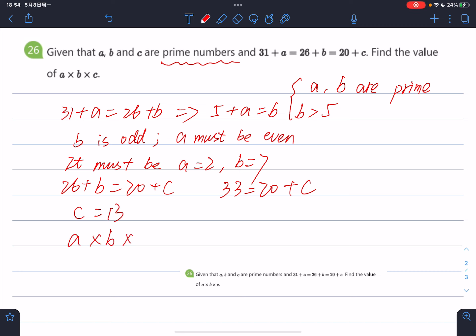Therefore, the product of a, b, and c equals 2 × 7 × 13. And the answer is 182.